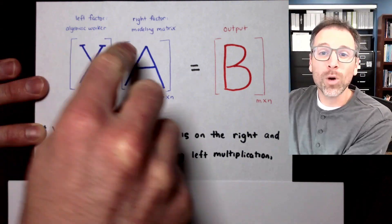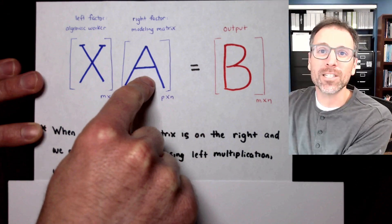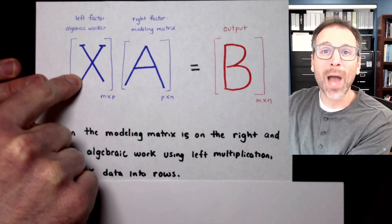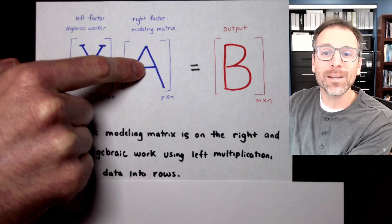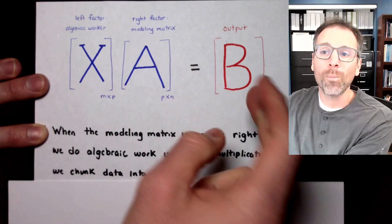When we do left multiplication, the right factor is our modeling matrix. That's the thing that shows up in some applied context. And the left factor is designed to do algebraic work. It's designed to manipulate that left factor. When we do the multiplication, we produce the output called B.